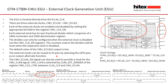The external clocks can be routed to IO pins by selecting the GPIO pins as an output alternate function. The CMU clock enable signal can also provide a clock for the CMU clock aid signal. CMU clock aid is switched by CLK8 external divider of the CMU clock control register, and it can switch between the CLS clock and the CMU external clock.